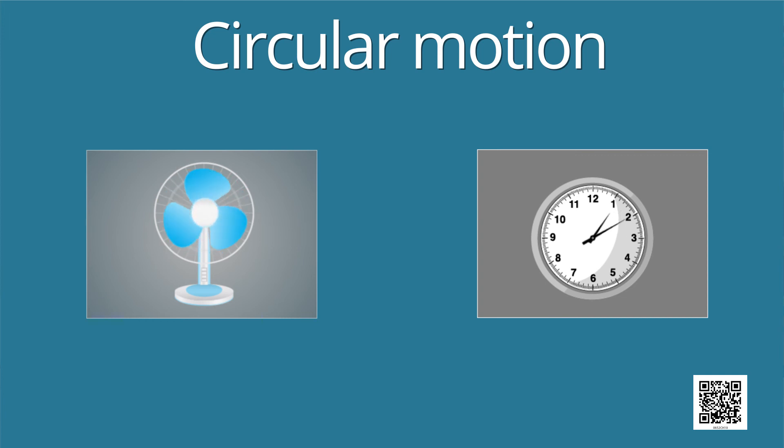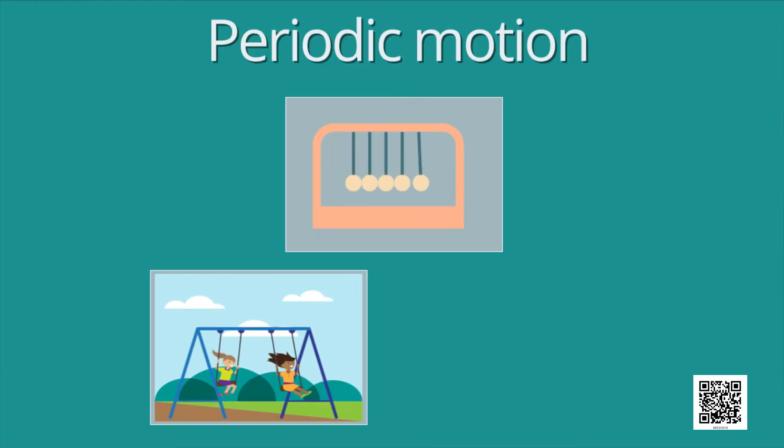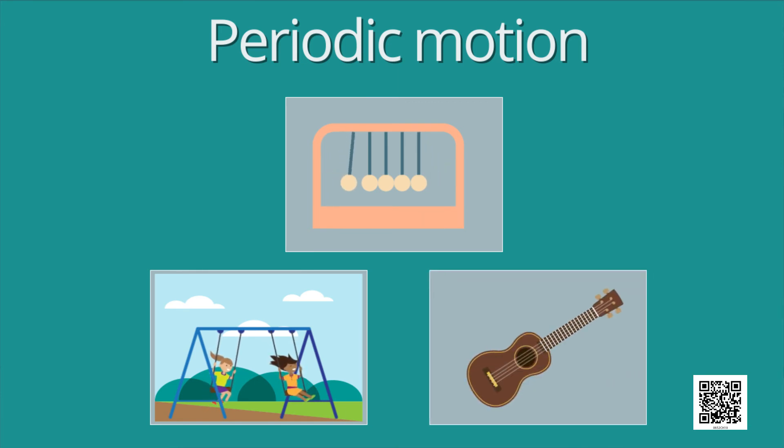Similarly, periodic motion is also a type of motion. When an object repeats its motion after some time, such a motion is called periodic motion. Pendulum, motion of a child on a swing and motion of strings of a guitar are examples of periodic motion.